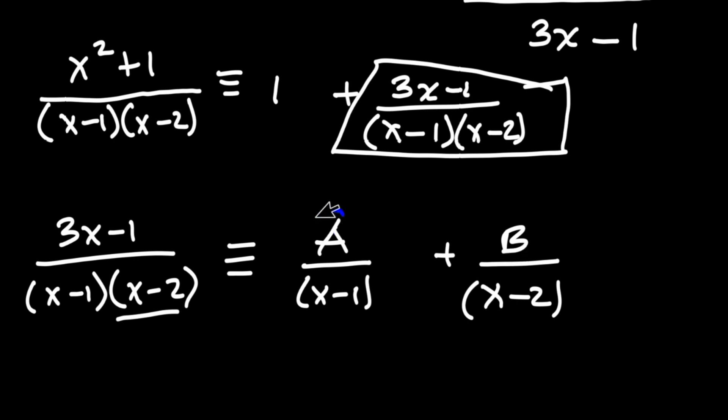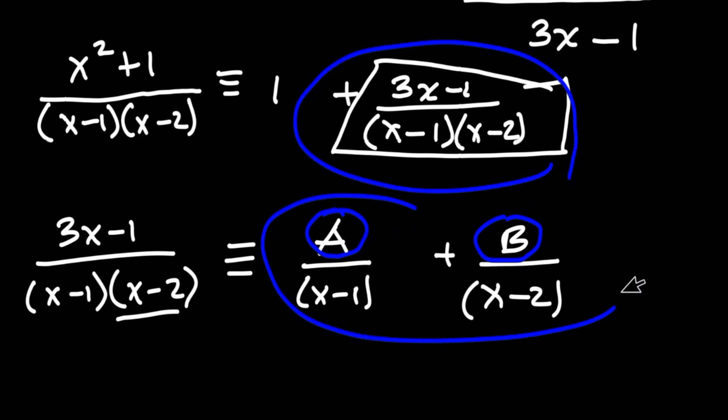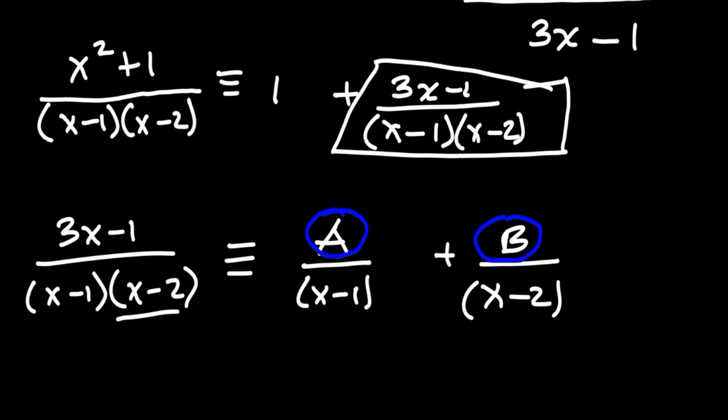The next step is to determine the values of A and B. If we determine the values of A and B, then we will replace this with what we have right here. But like I said, this video is just here to show you how to set improper fractions into partial fractions.